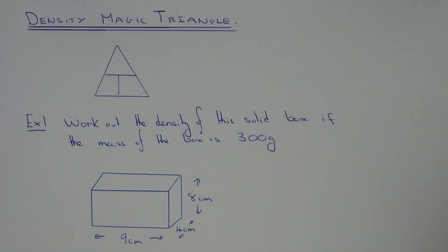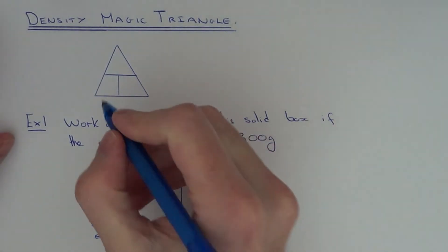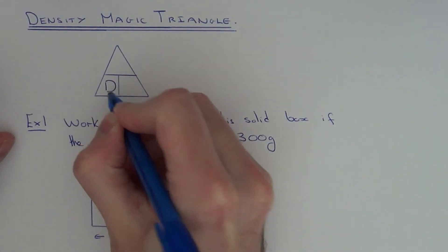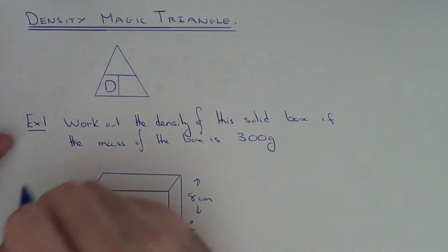Today I'm going to show you how to draw up the magic triangle for density. Density will go in the bottom left hand corner of your magic triangle.